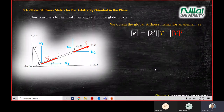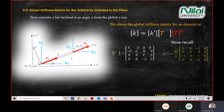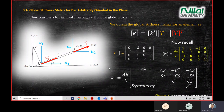In our previous class, we covered how to find the stiffness matrix for a bar, and we arrived at this four-by-four K matrix: K equals AE over L, with entries C-squared, CS, negative CS-squared, and so on. Due to symmetry, it reflects across the diagonal mirror axis to the other side.